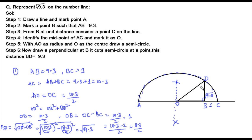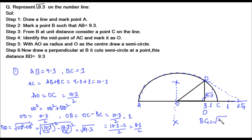So BD represents square root of 9.3. To represent this on the number line, we consider B as the origin. We know C is at one unit distance from B, so we mark E and extend the line to F. With BD as the radius and B as center, we draw an arc that cuts the number line at point G. The distance B to G represents square root of 9.3 on the number line.